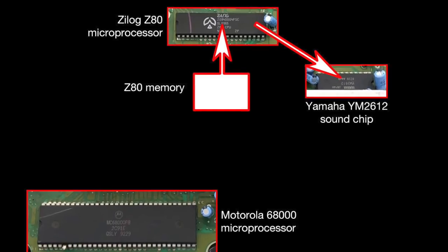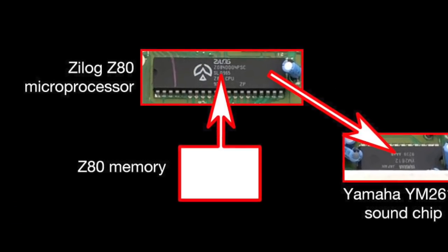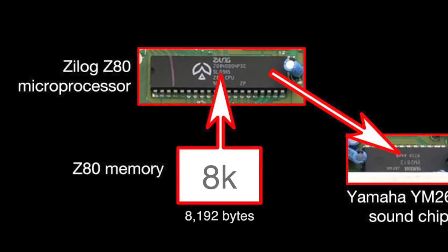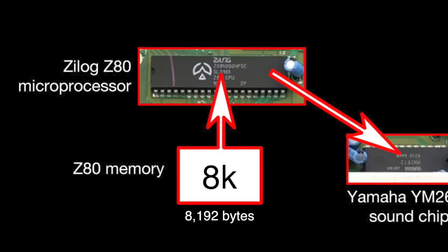Now, the Z80 memory is pretty small — just 8K for everything it needs. But if a game uses any samples, they will usually fit them all into the Z80 memory, because if they don't, it gets very messy, as you'll see. Typically, samples are used just for a drum track, if at all. But with what we're trying to do, we need a lot more memory to play with than the Z80 has.